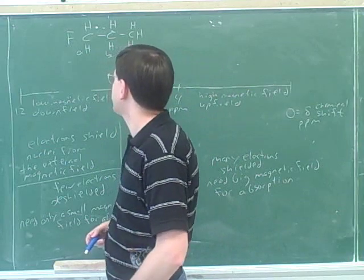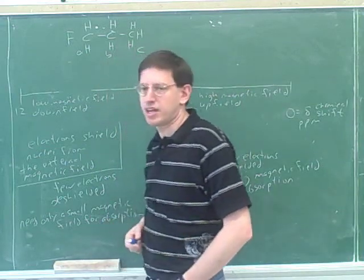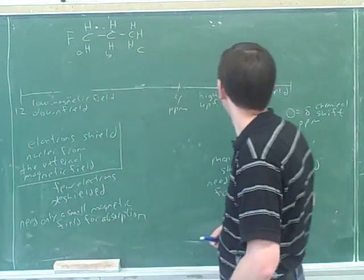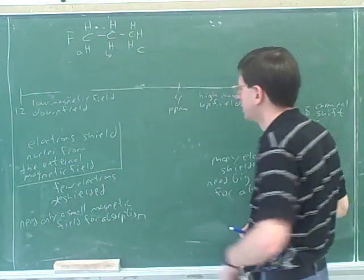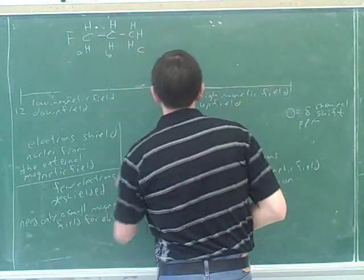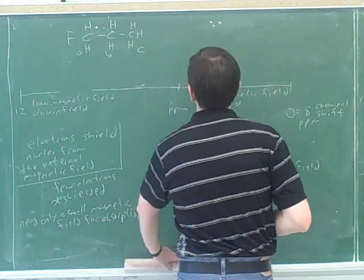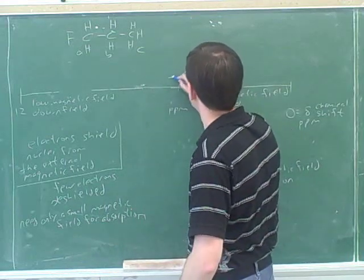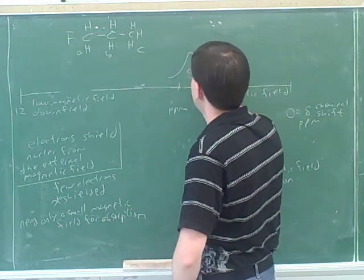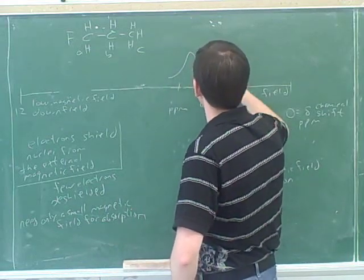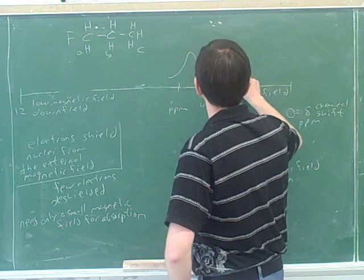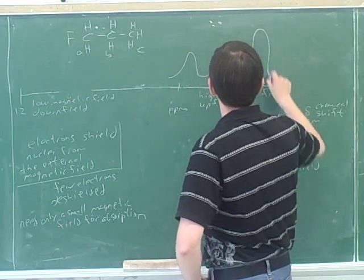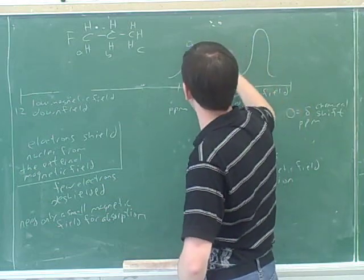Now which of these should be furthest to the left — A, B, or C? Furthest to the left would be A, and then B, and then C.